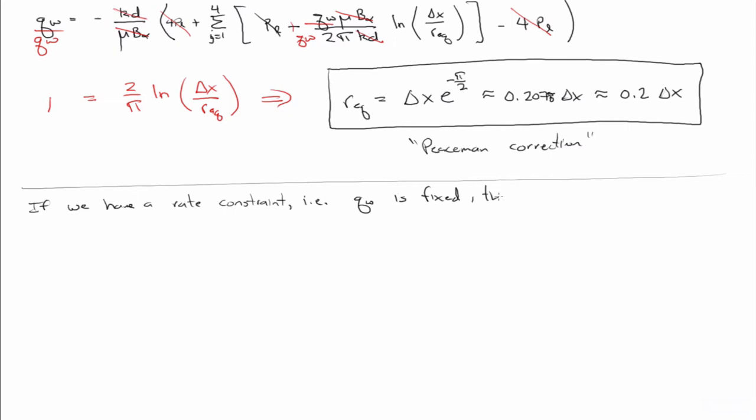Then we'll evaluate the pressure at the well at the radius of the well for P ref equal to PL and RF equal to REQ, which we now have an equation for. And if we do that, then we have pressure at the well.